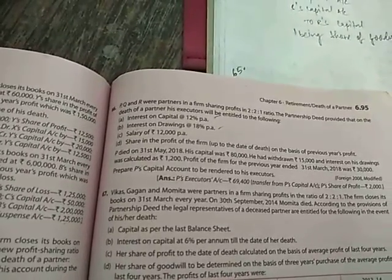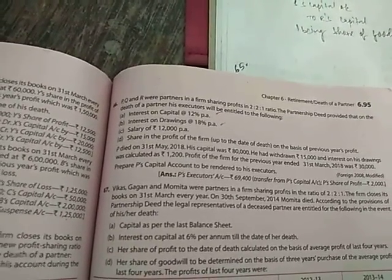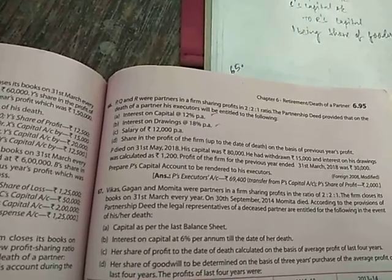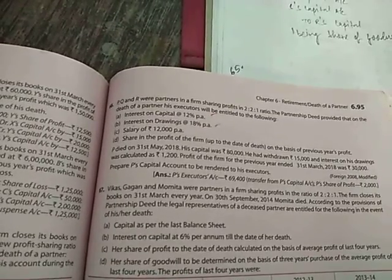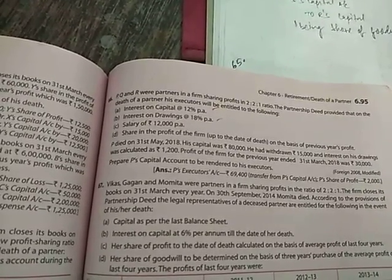On the basis of previous year's profit, you need to provide the share of profit in the firm. Next is P died on 31st May 2018. So April and May, only 2 months he had worked. His capital was 80,000, he had withdrawn Rs. 15,000, and interest in drawings was calculated at Rs. 1200.